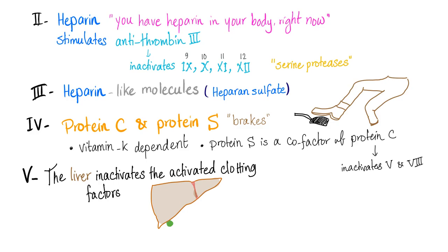What are the other anti-clotting mechanisms? You have heparin. Do we have heparin in our bodies? Yes — all of you, right now, have heparin in your body. It's a glycosaminoglycan. It stimulates antithrombin 3, and antithrombin 3 then inactivates the serine proteases, such as factors 9, 10, 11, and 12. Heparin-like molecules are floating around doing this job.